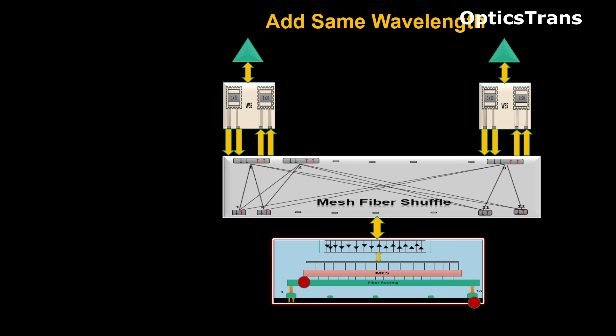If same wavelength is added, it directs from MCS to different degree, and from fiber shuffle sends to particular degree WSS.